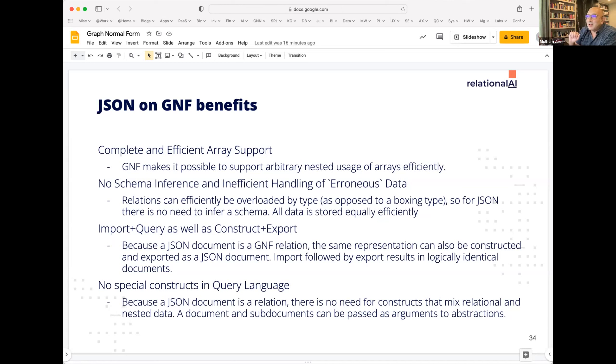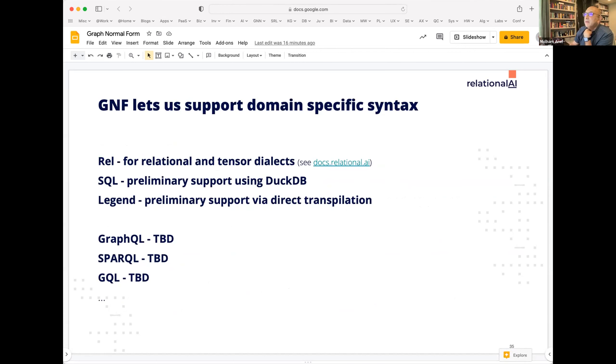Don't have time today to dig into that too much, but again, ask Martin, or ask me or watch some of our videos online and in this mapping, you get very clean and efficient support for all of the JSON documents. Including arrays and so on, you don't have to do schema inference and you don't have to have inefficient handling of erroneous data. Import plus query as well as construct and export. You can bring in any JSON document and then internally shred it to graph normal form and then export it and you get back exactly the same JSON document. So you can do this round tripping, and you don't need any special constructs in the query language to deal with this, where a lot of languages add nesting features to do so.